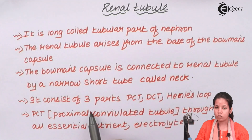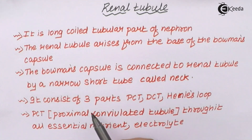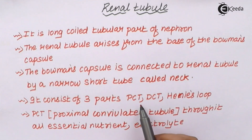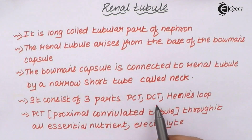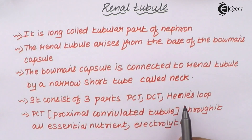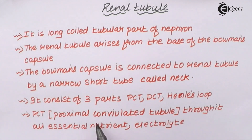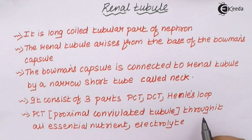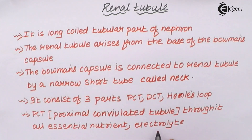It basically consists of three different parts: PCT, that is proximal convoluted tubule; DCT, that's distal convoluted tubule; and Henle's loop. Now your PCT, which is your proximal convoluted tubule, helps absorb electrolytes like sodium and potassium.